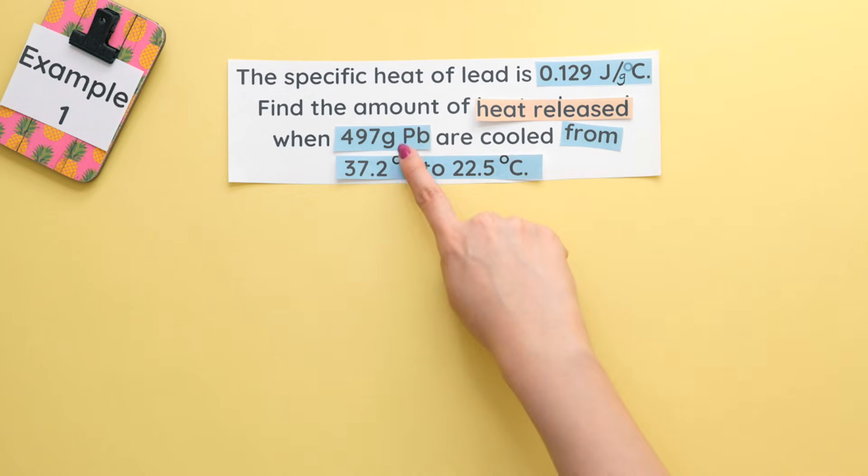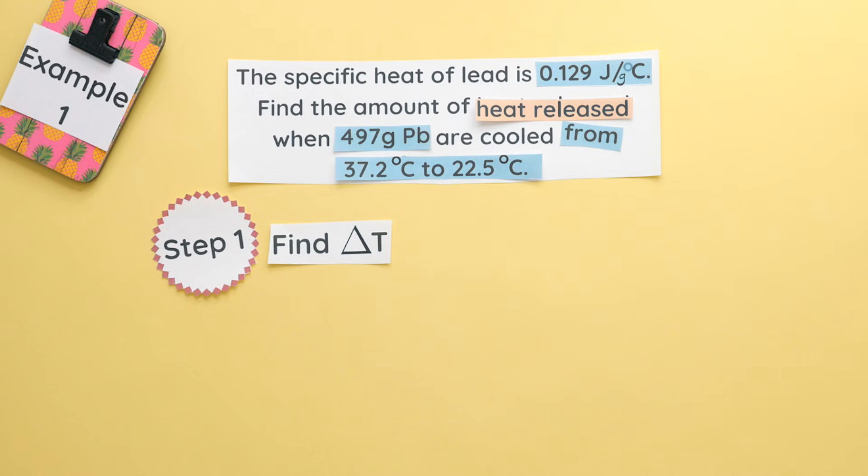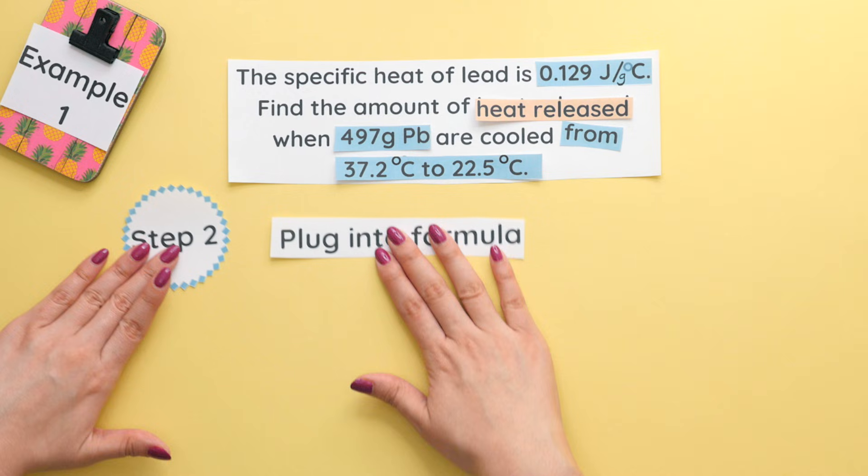Since everything is in its proper unit, we will start with step one, which is finding our change in temperature. Our change in temperature is our final temperature minus our initial temperature. When we do this, we get negative 14.7 degrees Celsius as our change in temperature.